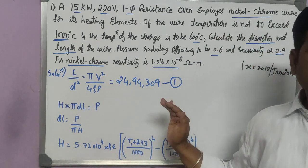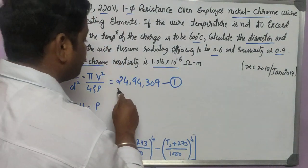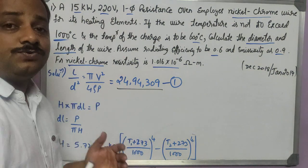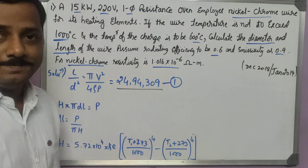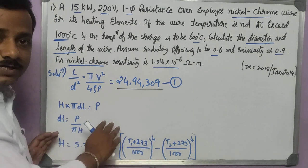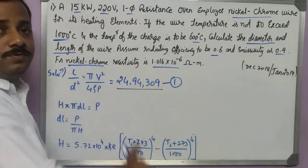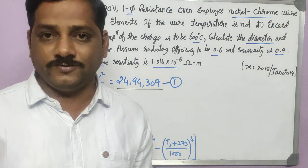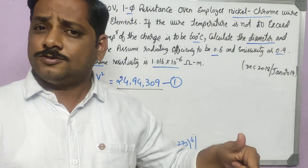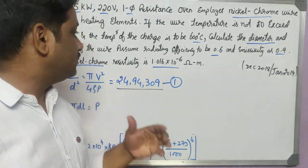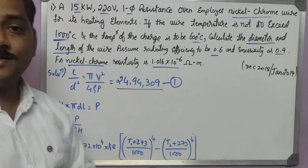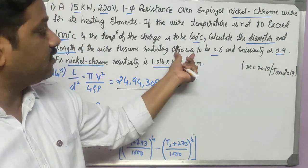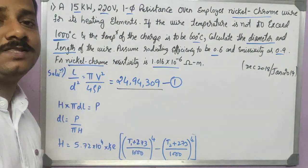We got L by d square, but I need to find individual values. Let us try to have another formula where I can get this L and D. Whatever input supply I am giving, 15 kilowatt electrical power, I am giving to the oven. The heat liberated out of that oven element has to be equal to this. Input and output has to be equal. Because of losses, these will be considered in the output. Finally, we have one concept called H.